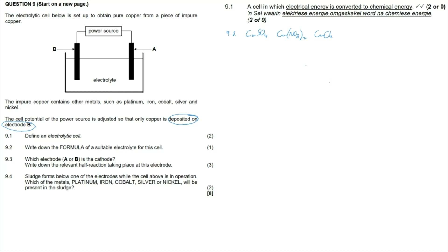Since copper is deposited on electrode B, we know that copper being deposited implies that the half-reaction is the reduction half-reaction, where copper is gaining electrons. If reduction is happening on electrode B, we remember with the mnemonic 'Red Cat' that reduction always happens at the cathode. So, the answer to question 9.3 is that electrode B is the cathode.